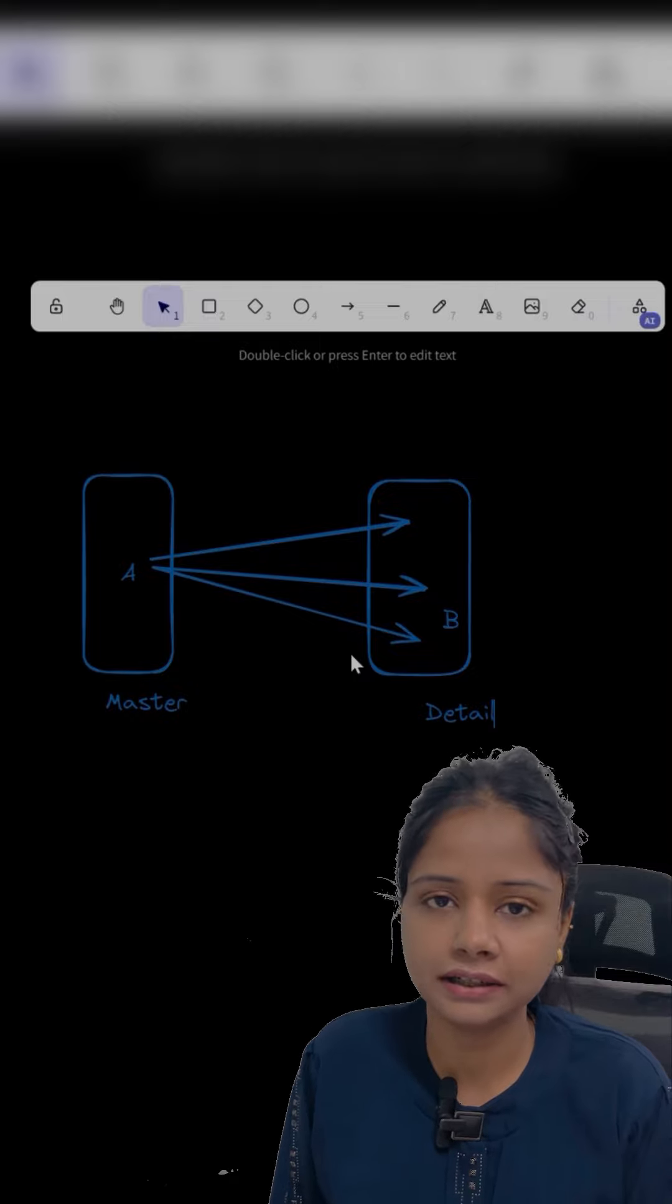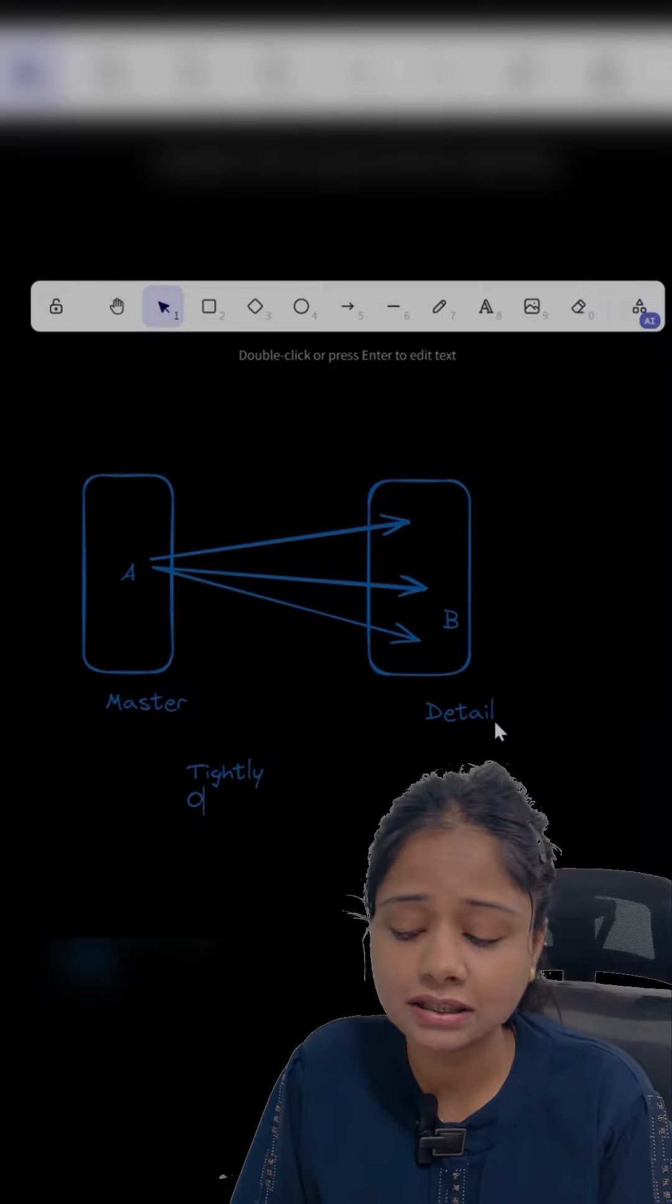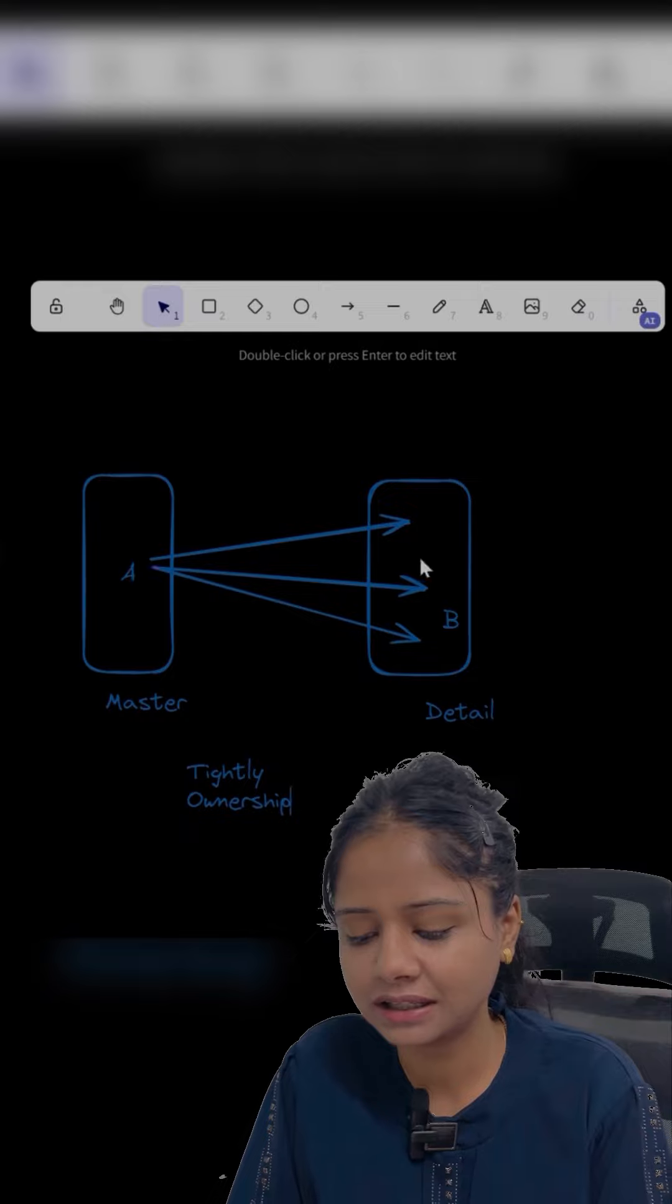Then next comes the ownership. Whatever the owner is there for A, the same owner will be for the child records also, that is for the related B records.